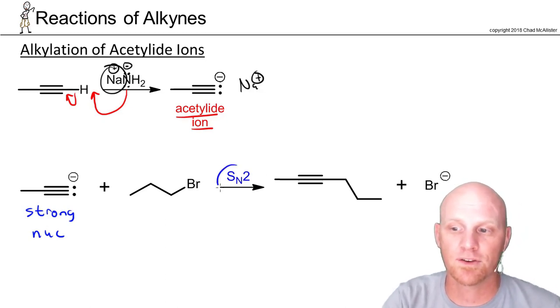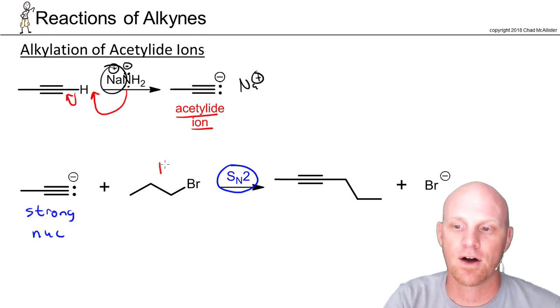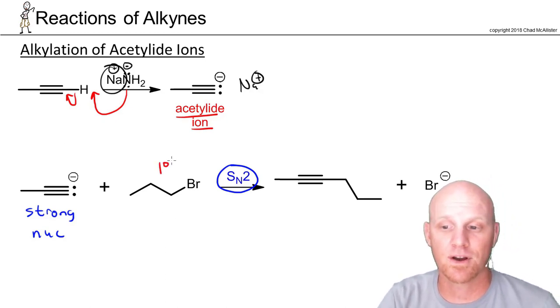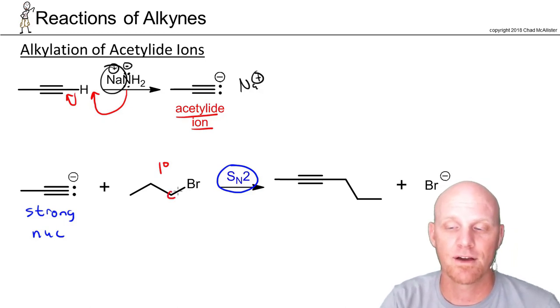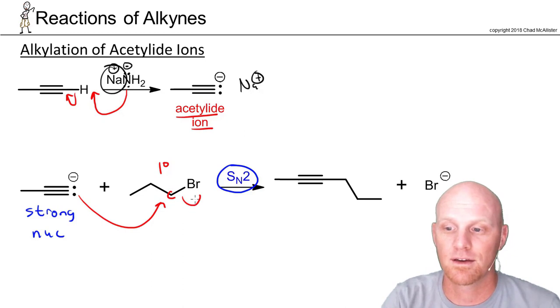Being a strong nucleophile, we can do SN2 reactions. To do an SN2 reaction, we need a good alkyl halide for backside attack. So here I've got a primary alkyl halide for that carbon right there. We're just simply going to do backside attack, kick off the leaving group.